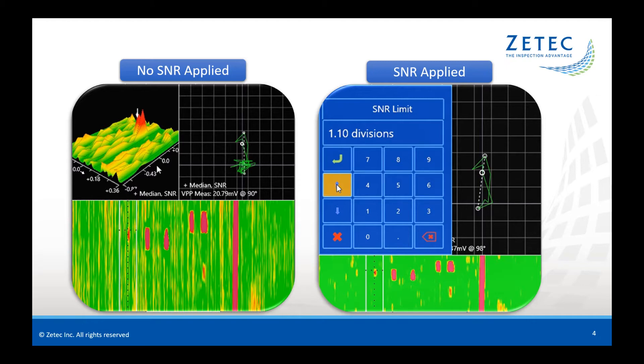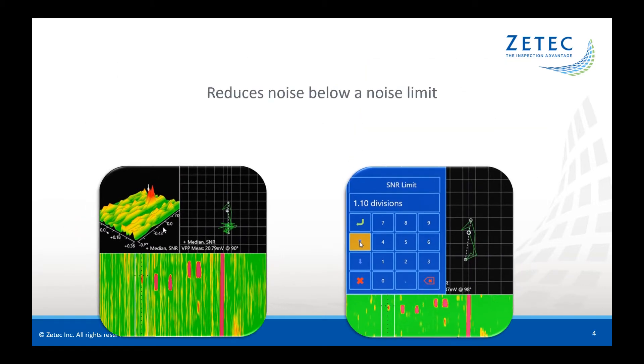You may be asking yourself, well, isn't this just a typical threshold filter? The answer is no. A threshold filter will filter out anything below a certain threshold, even the portion of the signal of interest which is below that threshold. This SNR filter will keep the entire signal of interest without attenuation while minimizing the noise component of the signal.